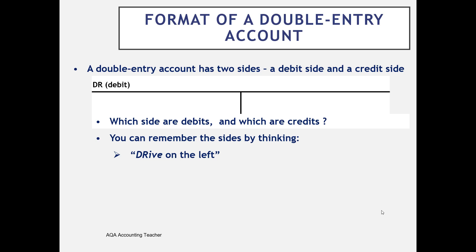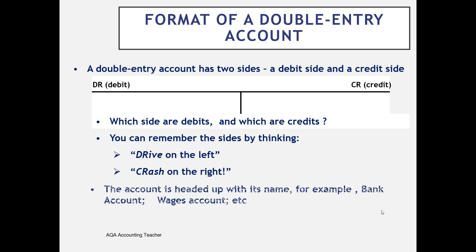One way to remember which side is which: in the UK we drive on the left, and if we didn't, we'd crash on the right. So debits on the left — DR is short for debit, from the old-fashioned word 'debitor'. Credit is CR, short for 'creditor' originally. Every single thing that appears on our financial statements will have its own T-account, so we'll end up with quite a number of these.